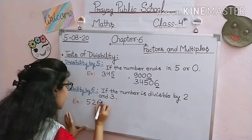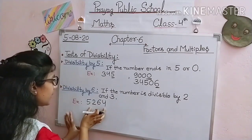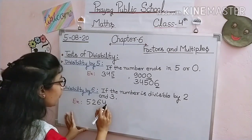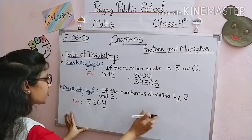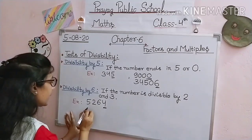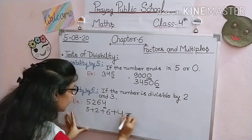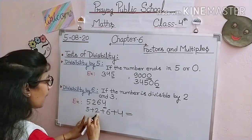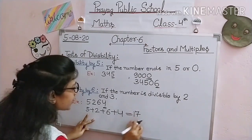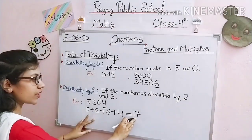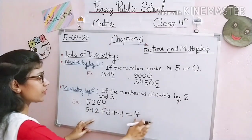The number is 5,264. We check whether this number is divisible by 2. Yes — because the unit digit is 4 and 4 is an even number, therefore 5,264 is divisible by 2. Now we check whether this given number is divisible by 3. We add each digit: 5 + 2 = 7, 7 + 6 = 13, 13 + 4 = 17. Is 17 divisible by 3? No — 17 is not divisible by 3. Therefore 5,264 is not divisible by 3.